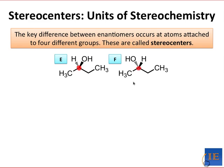It possesses bonds to four different groups: CH3, CH2, H, and OH. The arrangement of the four different groups around this key stereocenter leads to the enantiomeric relationship between E and F.